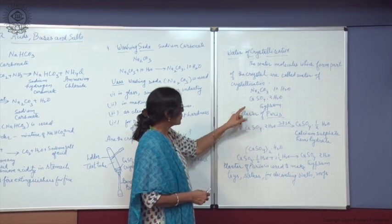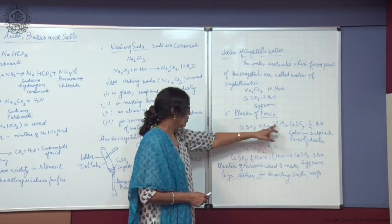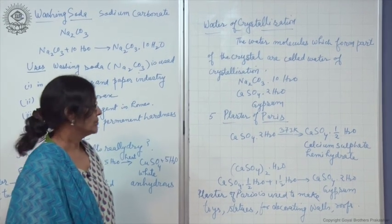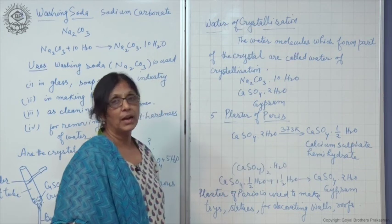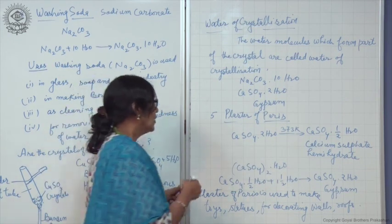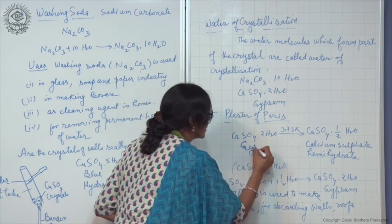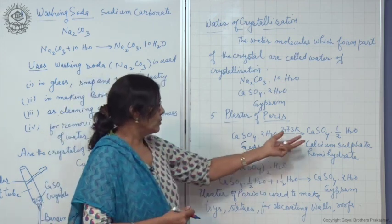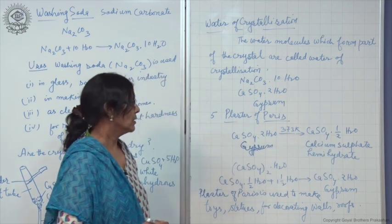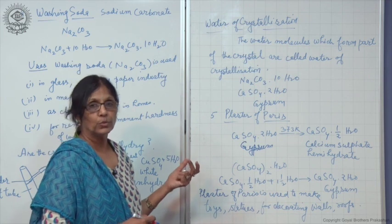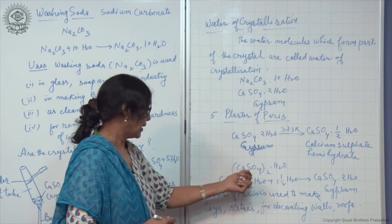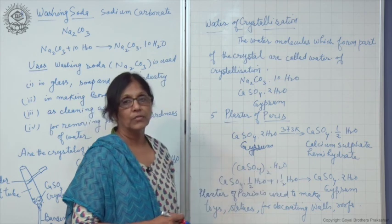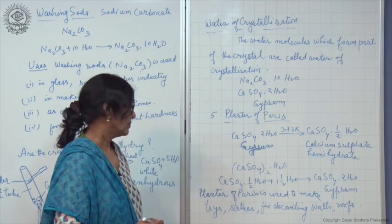When gypsum is heated to about 373 Kelvin, it forms plaster of Paris. Plaster of Paris is calcium sulfate hemihydrate. On heating gypsum, we get calcium sulfate hemihydrate. Why is it half H2O? Actually, one water molecule is shared by two calcium sulfate molecules. We can also write it like this: CaSO4 whole twice H2O. Two molecules of calcium sulfate share one molecule of water.